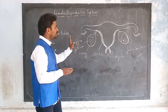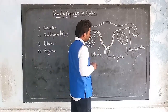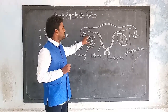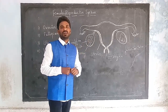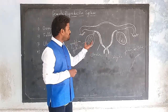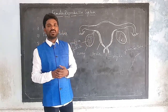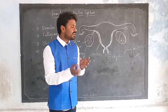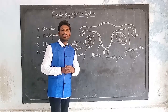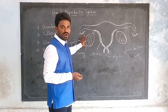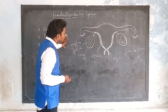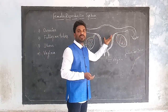Each ovary contains a large number of small cellular structures called follicles — Graafian follicles. In each Graafian follicle, a single ovum is present. When the ovum develops, the Graafian follicle grows, ruptures, and releases the ovum into the body cavity. This release of ovum from the Graafian follicle is called ovulation. Ovaries are involved in the ovulation process.